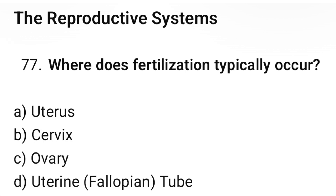Question number 77: Where does fertilization typically occur? The correct option is D. Uterine tube.